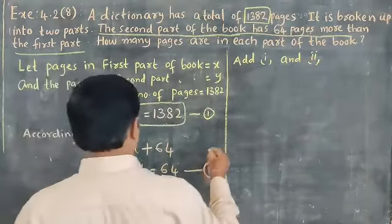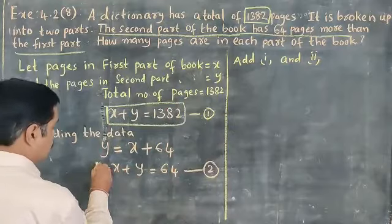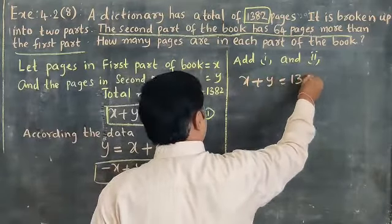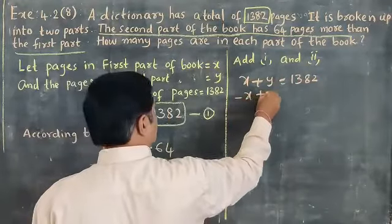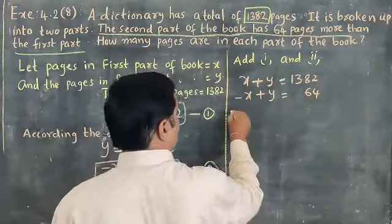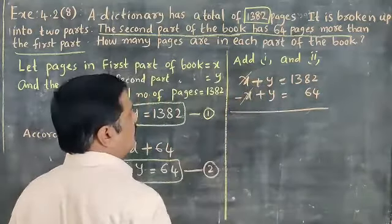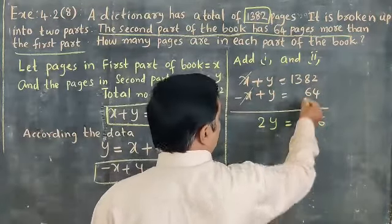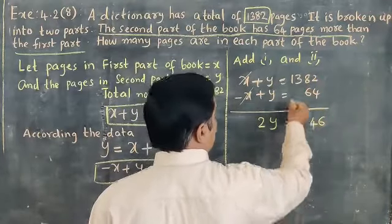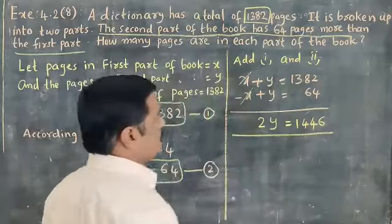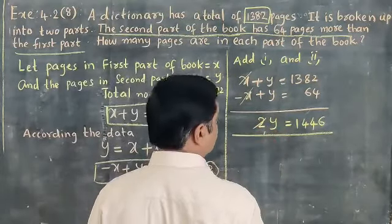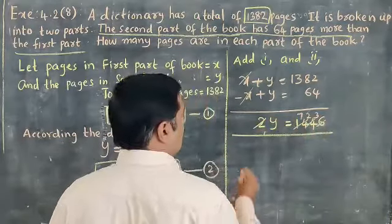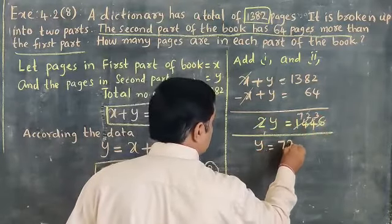When we add the first and second equations: x plus y equals 1382, and minus x plus y equals 64. Adding them, plus x and minus x cancel, we get 2y. That is equal to 1446. Dividing: 2 sevens are 14, 2 twos are 4, 2 threes are 6. So y is equal to 723 pages.